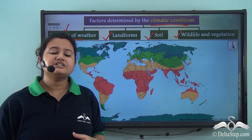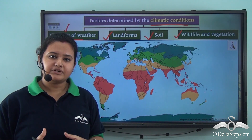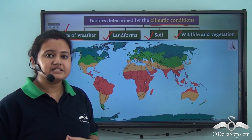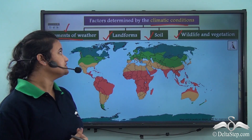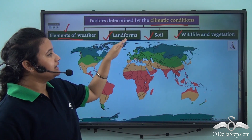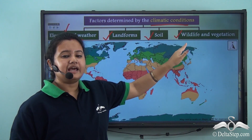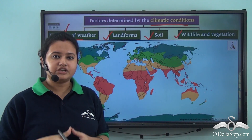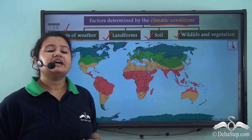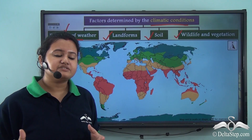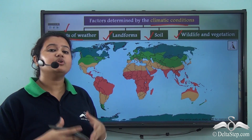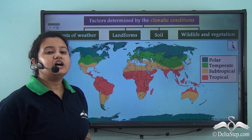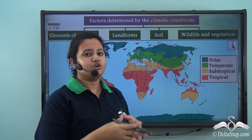The flora and fauna found in different parts of the world are also different. In a forest one can find tall trees and a great variety of wildlife, whereas in a desert thorny bushes and cactus grow and the variety of wildlife is very limited. So we understand that factors like elements of weather, landforms, soil, wildlife, and vegetation vary across several natural regions.